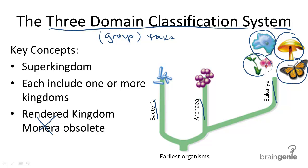According to this proposed evolutionary timeline to the right, archaea and eubacteria have their own domain. This is because the genes and enzymes found in archaea resemble those found more in eukaryotic organisms than in the prokaryotic organisms we know of today. Their cell walls and plasma membranes are quite different from one another.